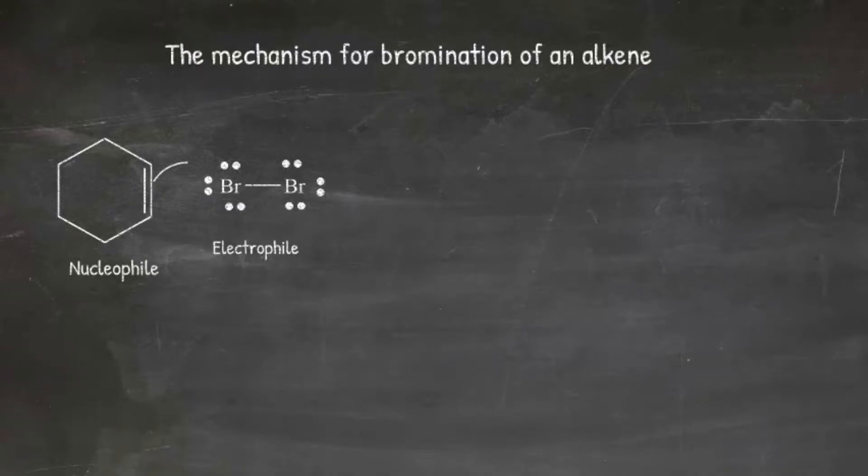The first curved arrow begins at the nucleophile and points at a bromine atom. This then causes a heterolytic bond cleavage between two Br atoms.